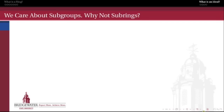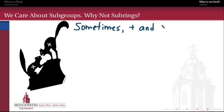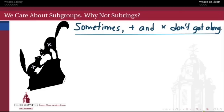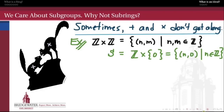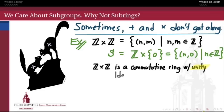So why do we not care about sub-rings so much? The blithe answer is that sometimes the addition and multiplication operations inside a ring don't get along inside a sub-ring the way we might like. The best way to illustrate that is with a quick example. Let's look at the cross product of the ring of integers with itself — just ordered pairs of integers with component-wise addition and multiplication — and then look at the subset which consists of those pairs for which the second entry is equal to 0, so S is Z cross {0}.